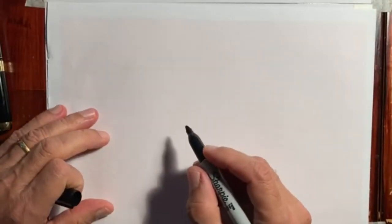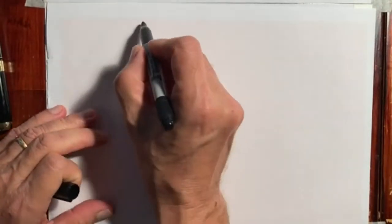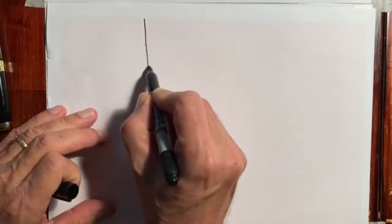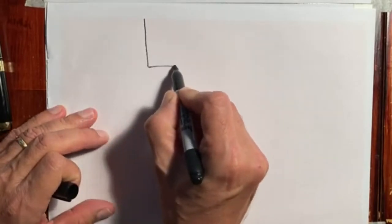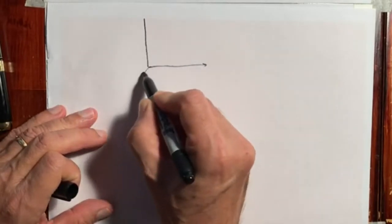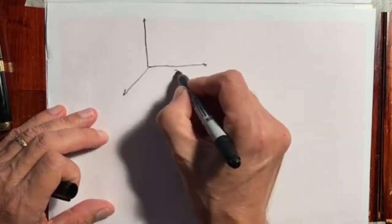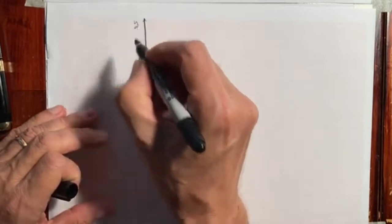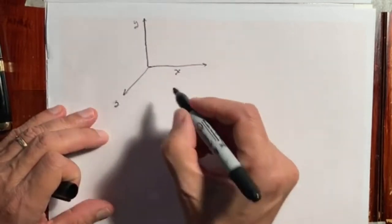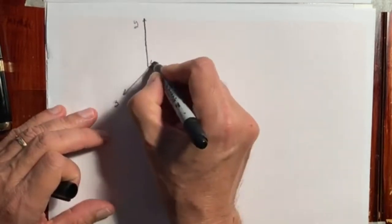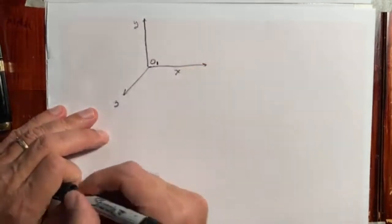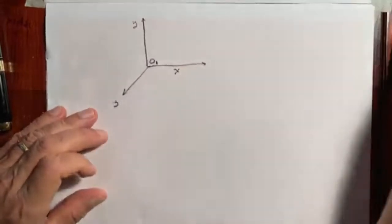This video is going to show the derivation of how a force transforms relativistically. We're going to start with a frame of reference X, Y, Z and we're going to label it X, Y, and Z. The origin is going to be O sub 1, because it's the origin of our first frame of reference.